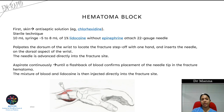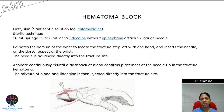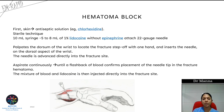For the hematoma block, use antiseptic solution to clean the area over the Colles' fracture. Using sterile technique, take a 10 ml syringe with 5 to 8 ml of 1% lidocaine without epinephrine attached to a 22-gauge needle. Palpate the fracture site at the wrist and insert the needle to the dorsal aspect, advancing toward the fracture while continuously aspirating until a flash of blood is obtained. The blood will mix with the lidocaine solution, which is then injected directly into the fracture site.